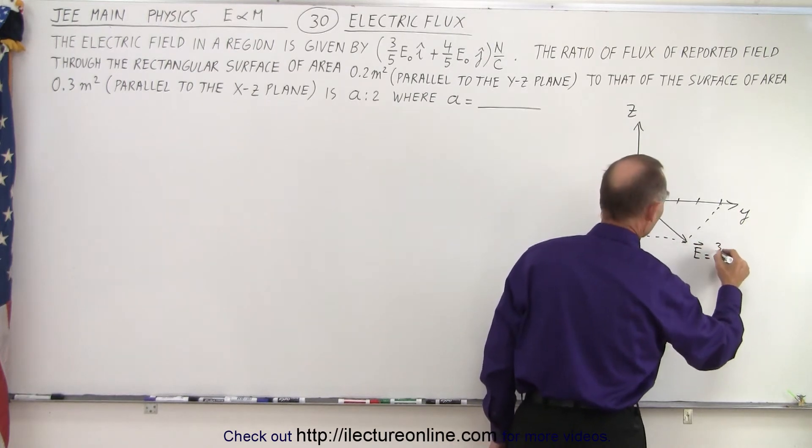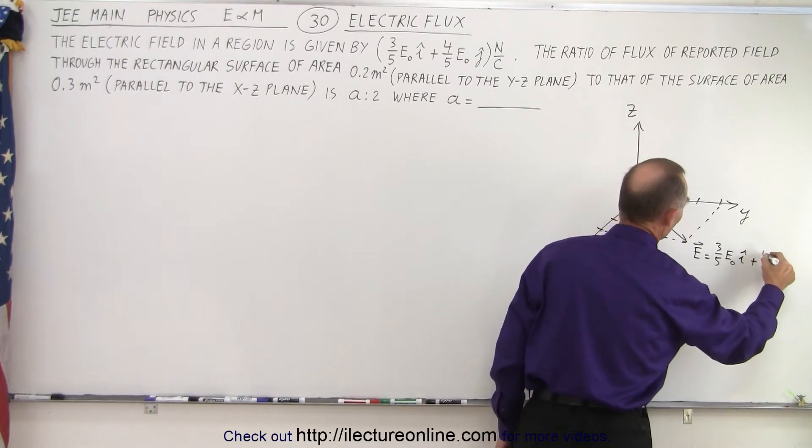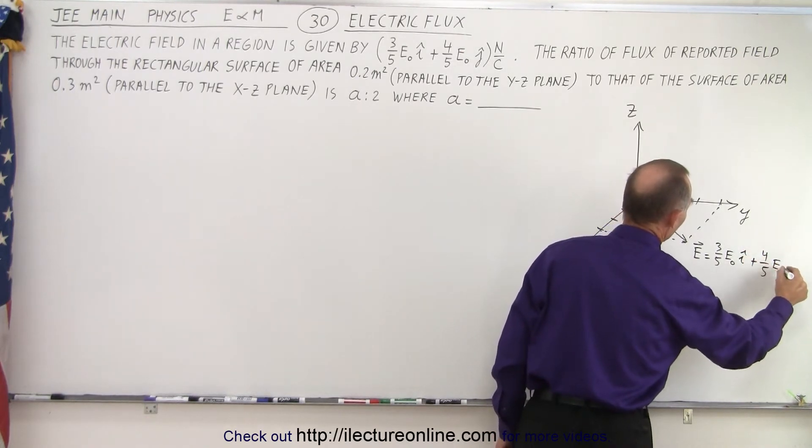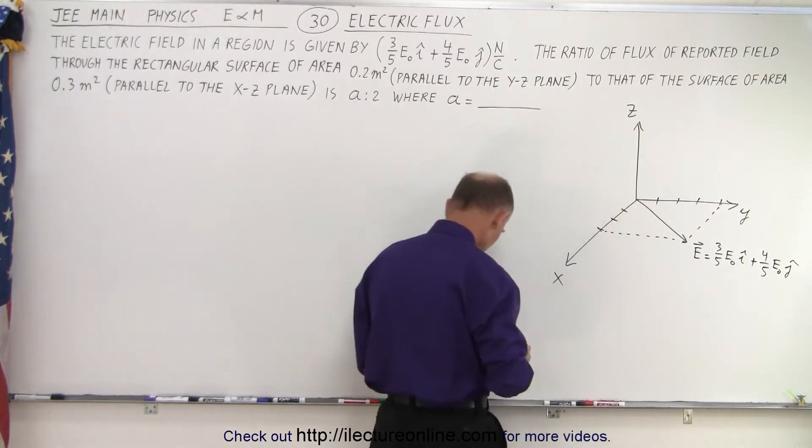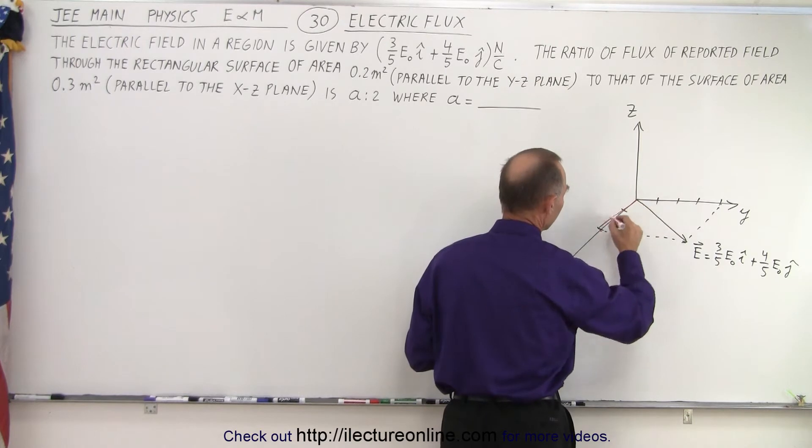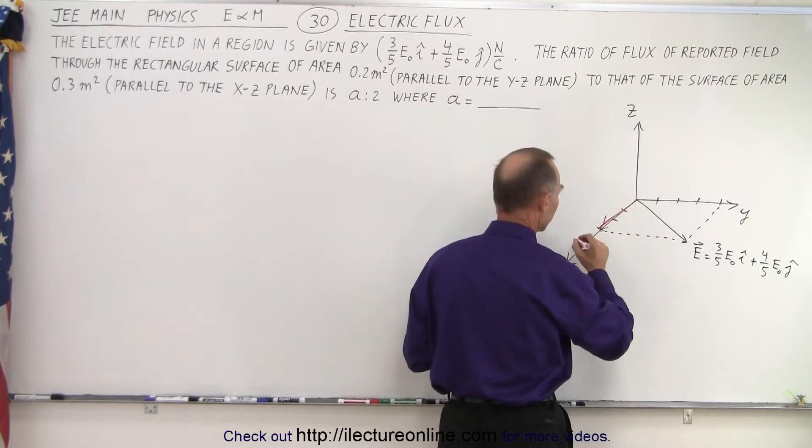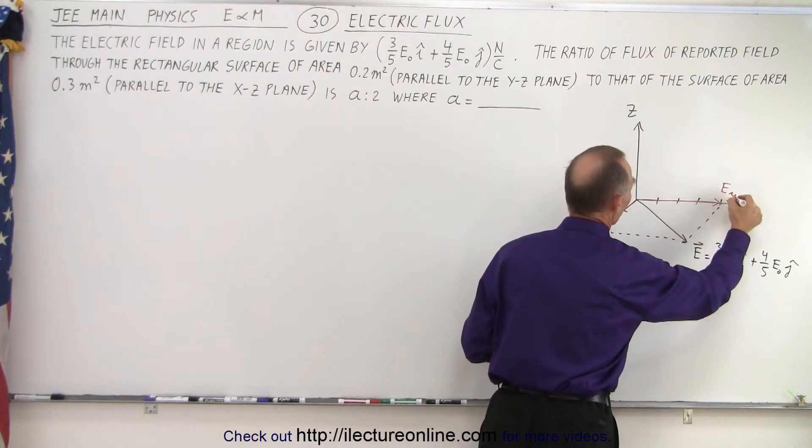So that would be the E vector, which is equal to 3/5 E₀ in the I direction plus 4/5 E₀ in the J direction. And let me try to use a different color here. So we're going to have an X component like this. So we have the X component, E sub-X, and we have the Y component like this. Let's call that E sub-Y.